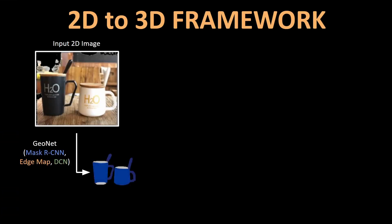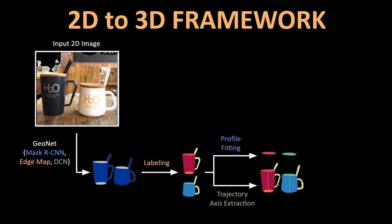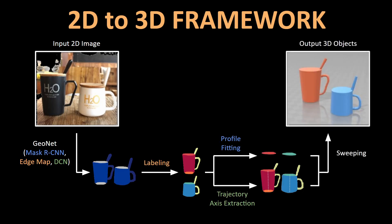Their framework uses a Mask R-CNN to perform instance segmentation on images to focus on the object of interest. They combine this information with an edge map to obtain the body and profile information of that object, which is then labeled according to generalized primitives — basic building blocks like cylinders or cuboids. These building blocks can then be transformed to 3D shapes with a sweeping procedure commonly used in CAD design.